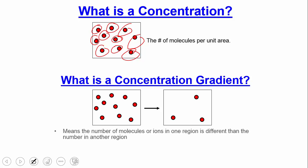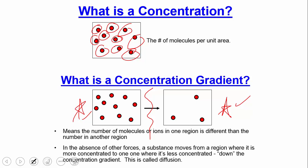In the absence of other forces, molecules bounce into each other through something called Brownian motion. Over time, molecules move from a high concentration on one side to a low concentration on the other. This continues until reaching something called equilibrium.